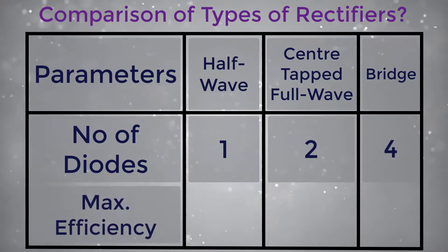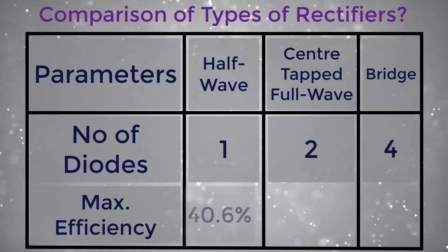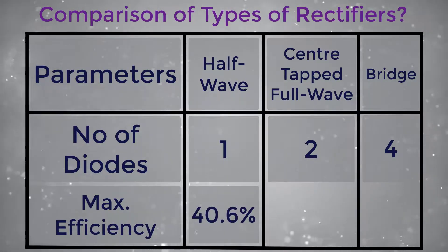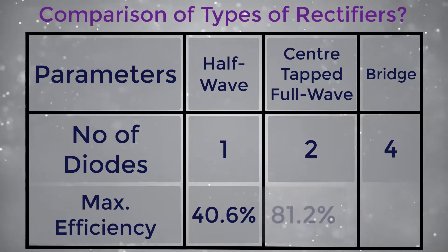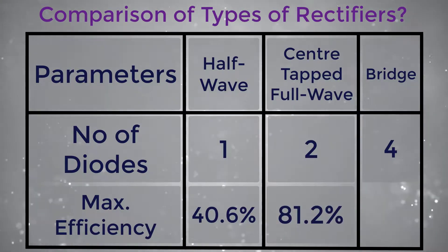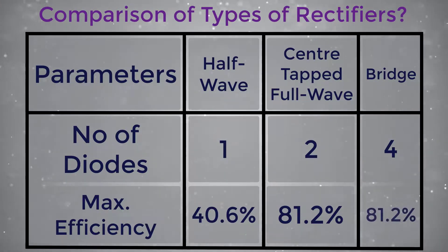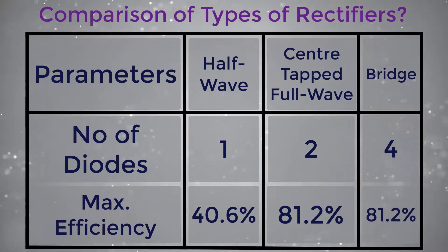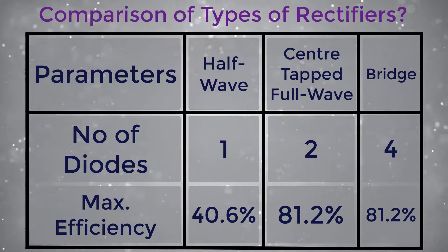Maximum efficiency: for half wave it is 40.6%, whereas it is 81.2% for both center tapped full wave and bridge.